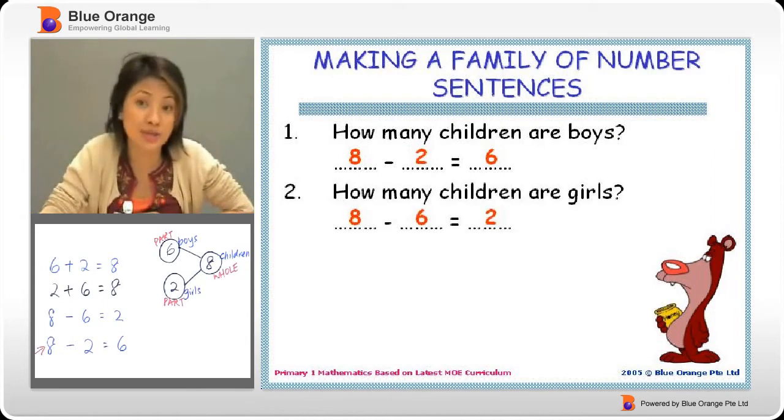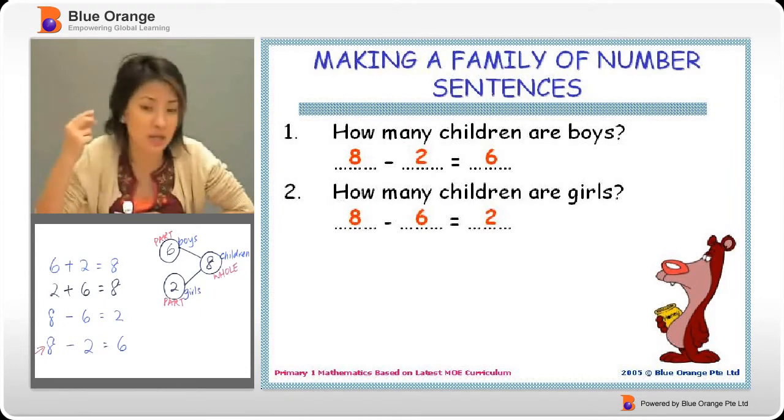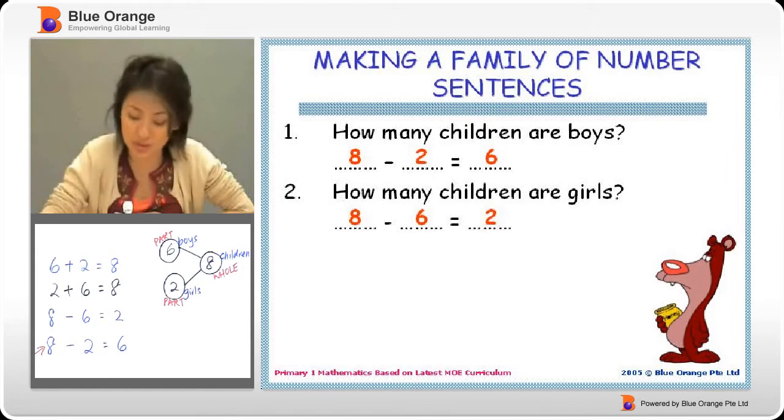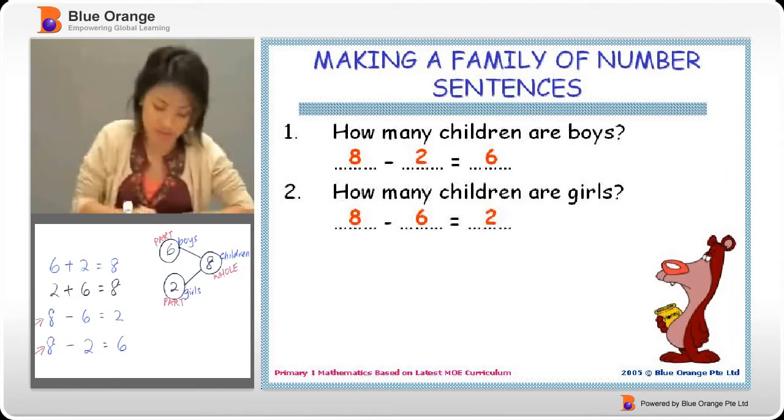Next, how many children are girls? So if we insist on working on a number sentence, then we can say eight children. Take away the six boys will give me two girls. So eight minus six gives us two. There I have it.